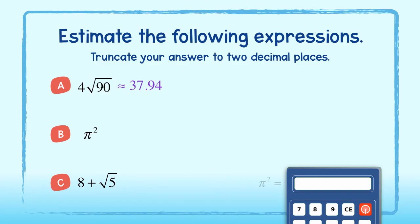Pi squared truncated to two decimal places is approximately 9 and 86 hundredths. And 8 plus the square root of 5 truncated to two decimal places is approximately 10 and 23 hundredths.